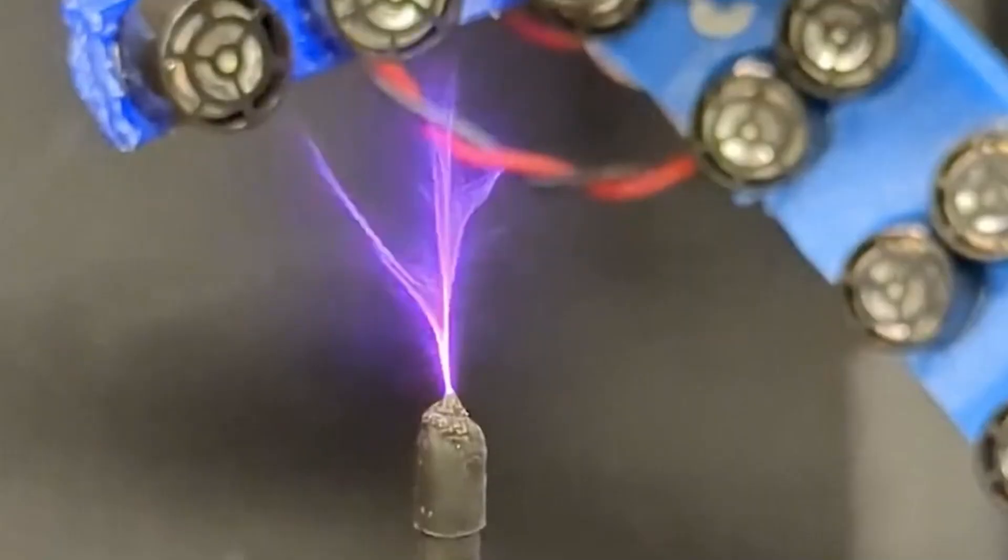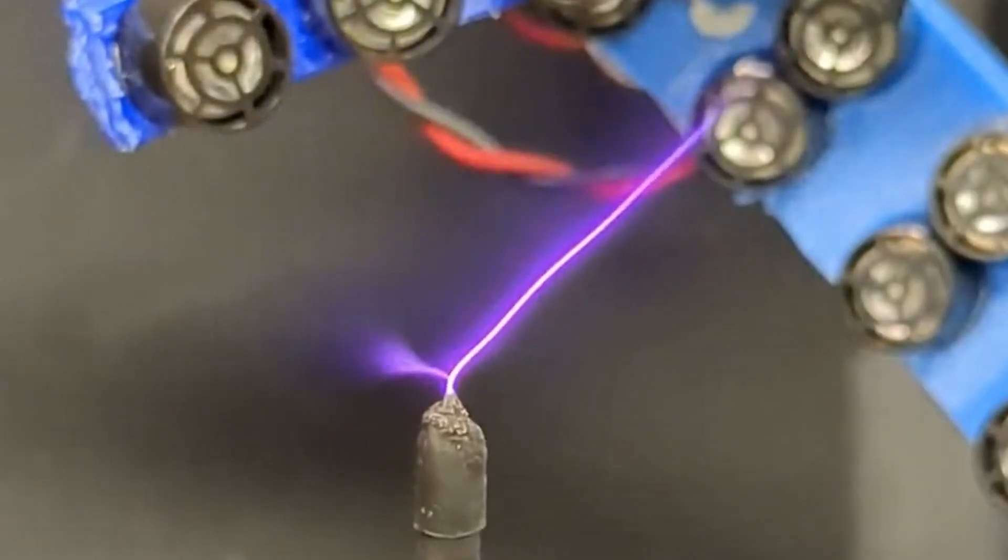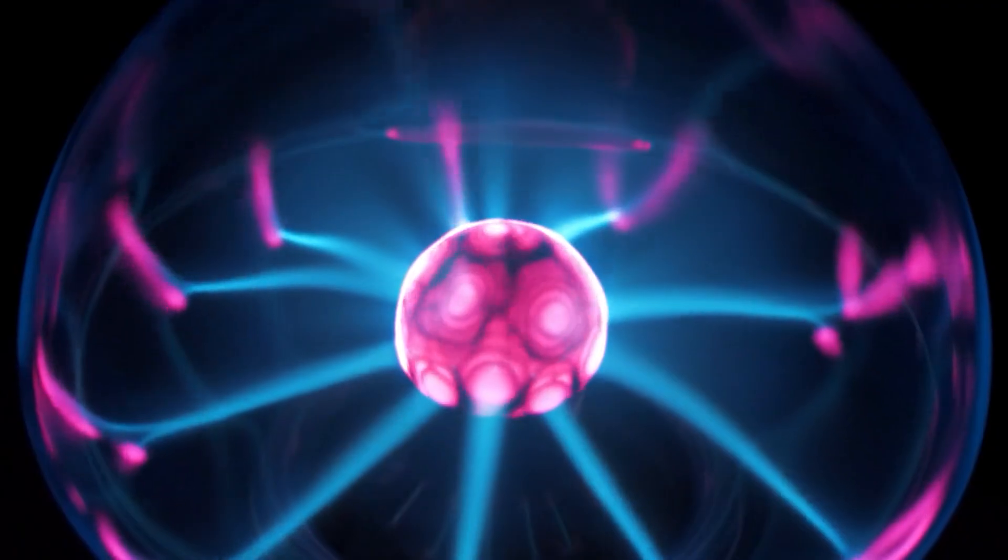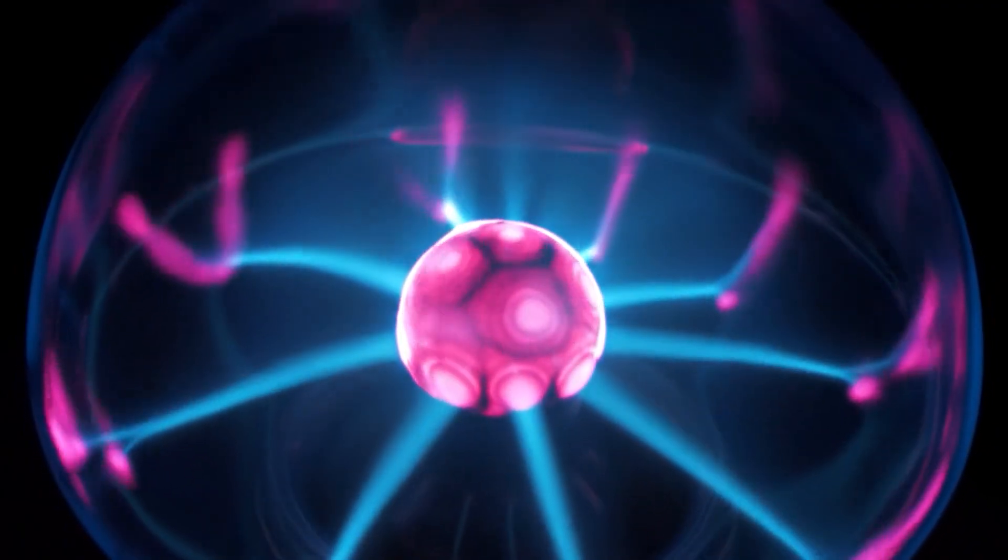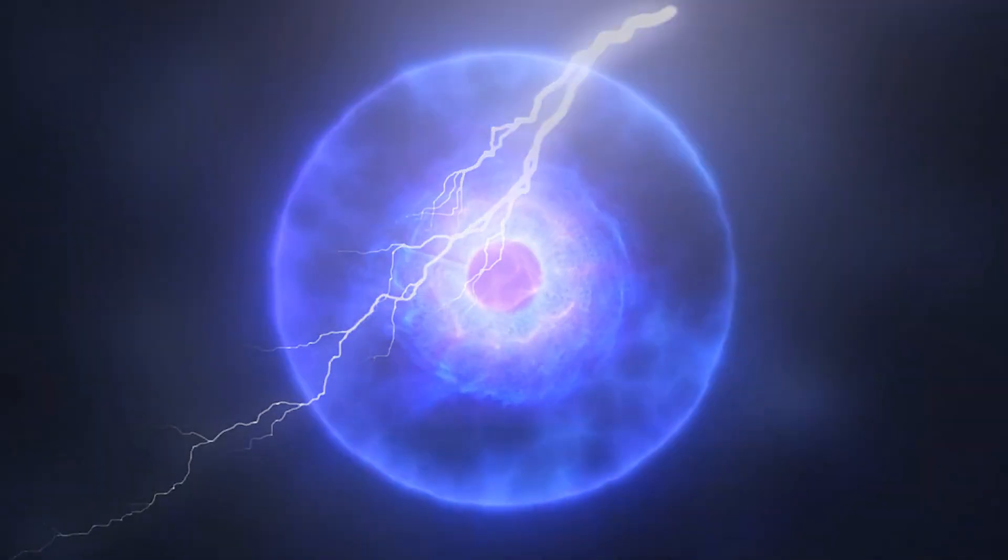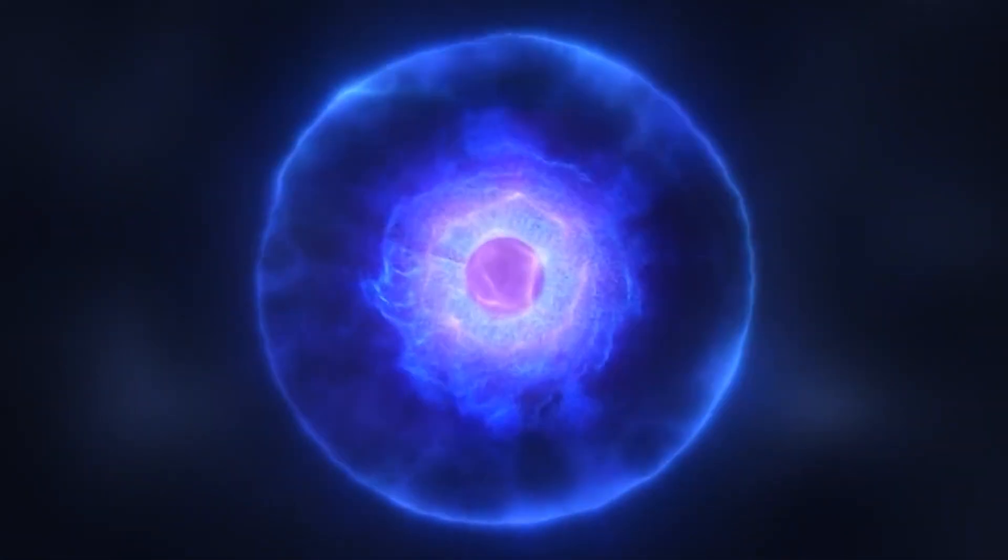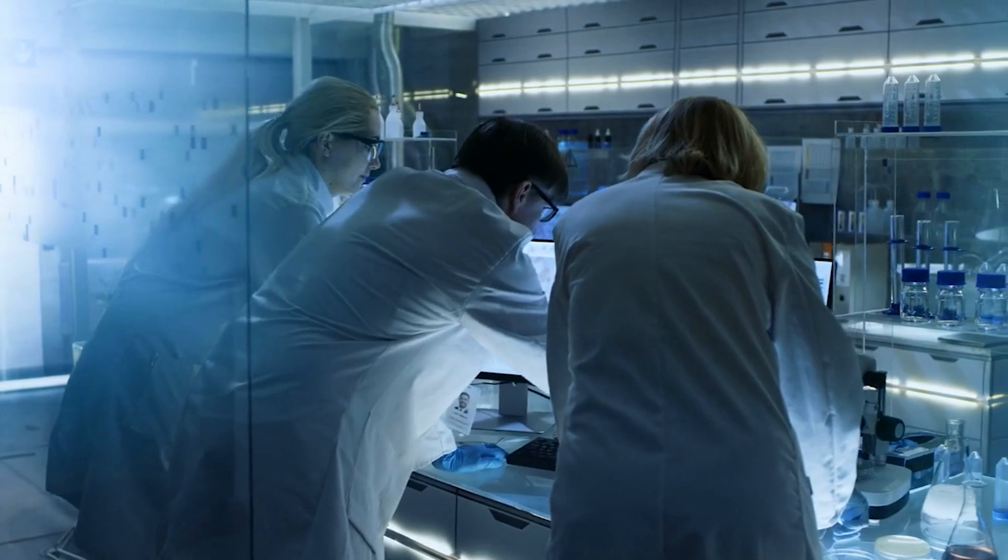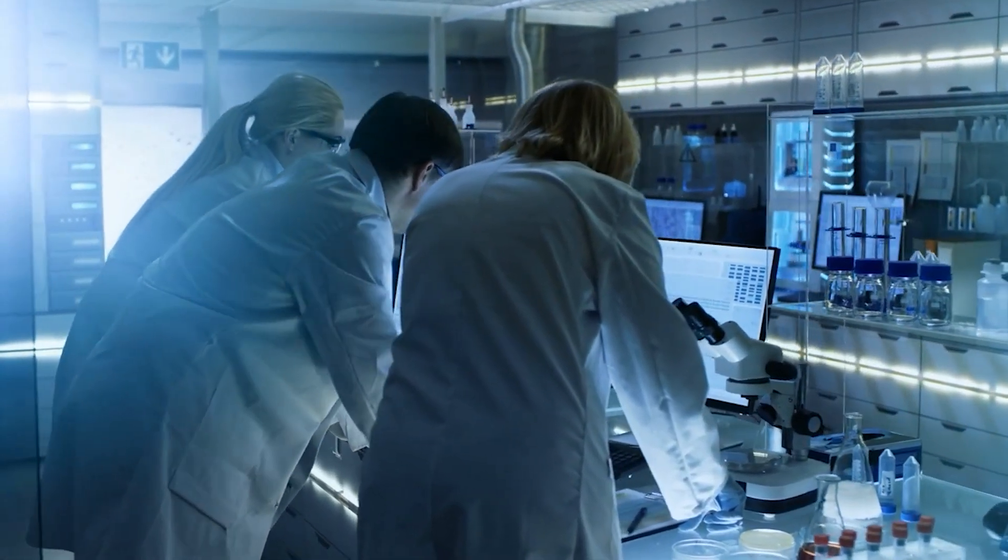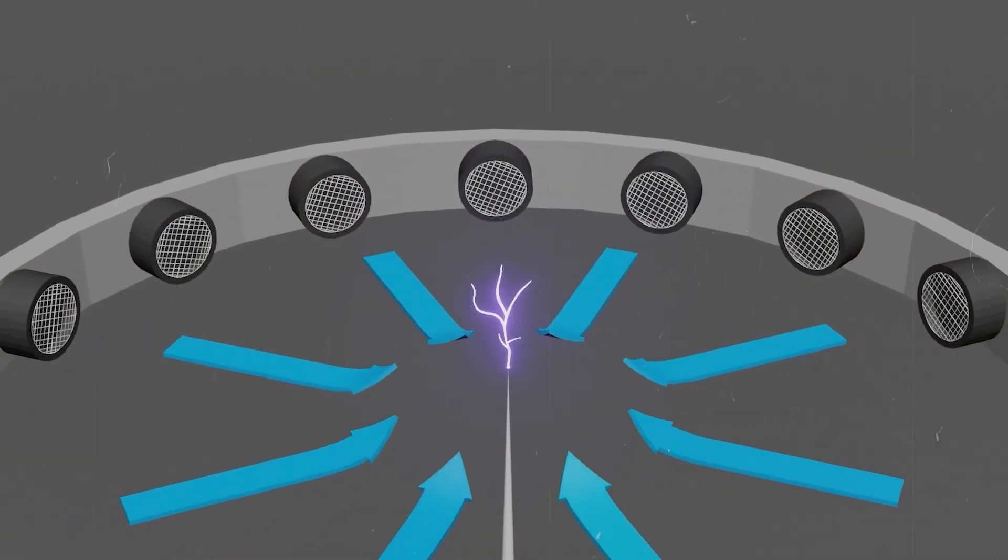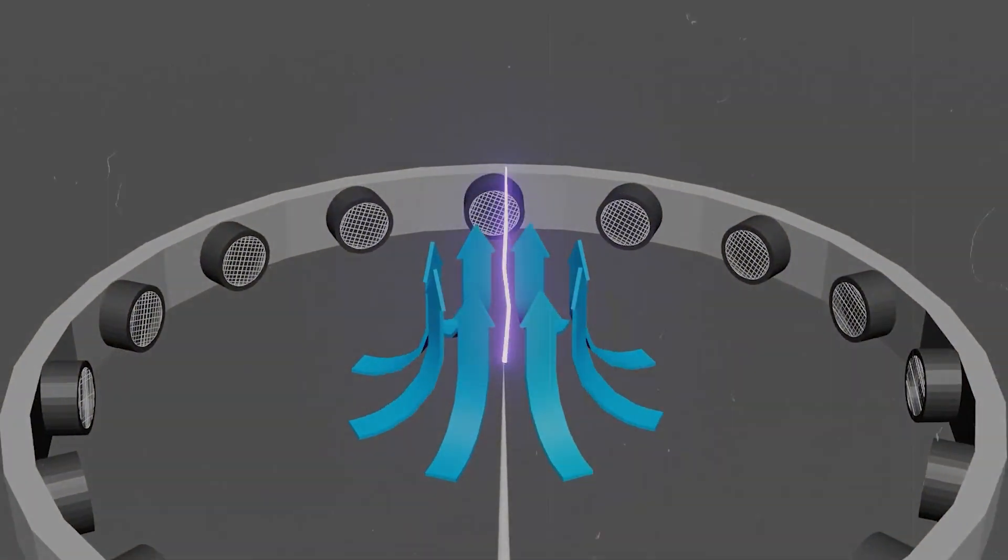For example, a spark can travel along a glass surface rather than straight through open air. The surface of the glass provides an easier way to ionize, even if the path is longer. That makes controlling lightning or any form of plasma extremely difficult. Scientists must create a path that is easy to ionize before a high voltage is released. If not, the spark simply chooses its own chaotic route.